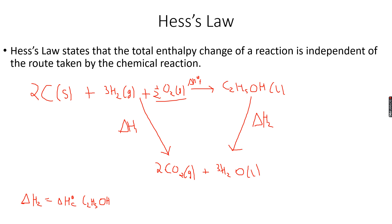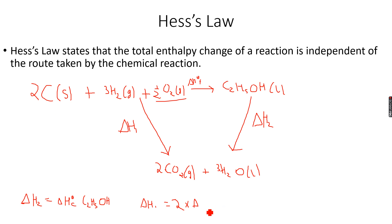Delta H1 is equal to 2 times the standard enthalpy change of combustion of carbon, because the standard enthalpy change of combustion applies to the burning of one mole of a substance — so if you are burning two moles, you multiply by two. Then add three times the standard enthalpy change of combustion of hydrogen, because we are burning three moles of hydrogen.